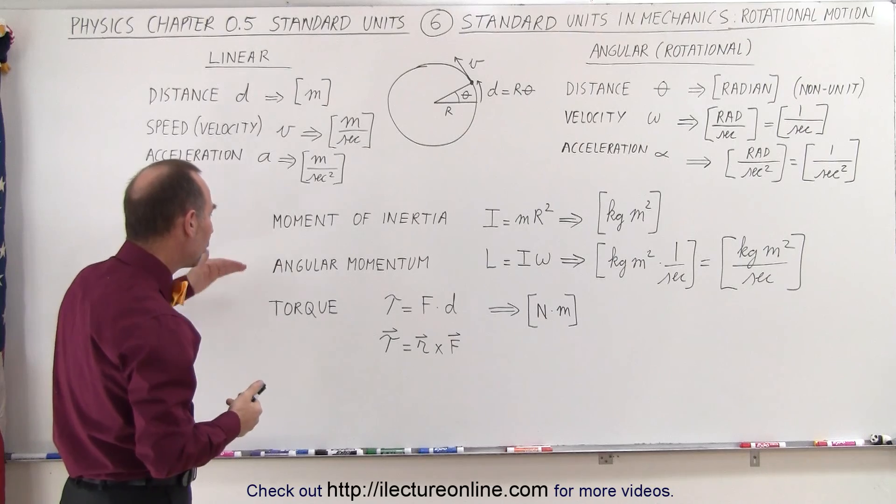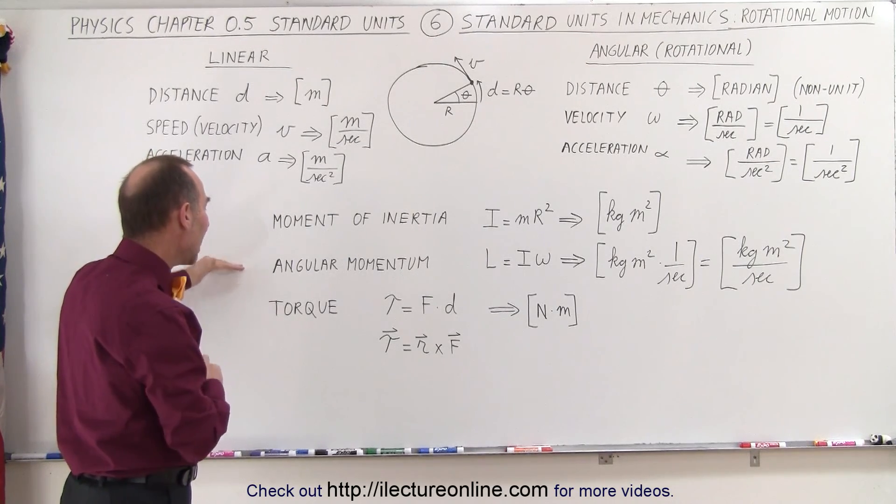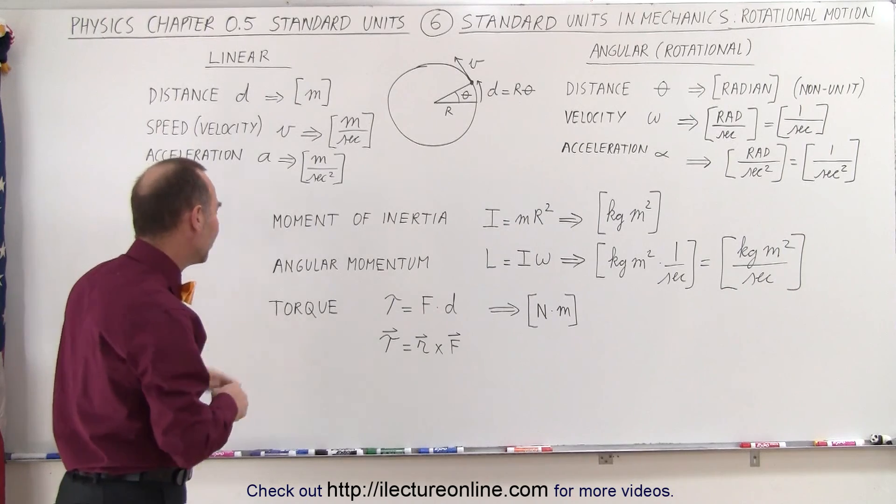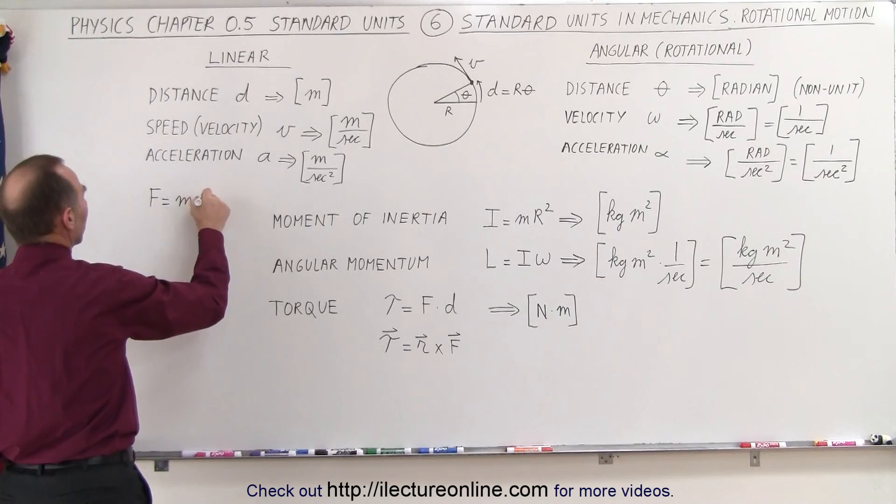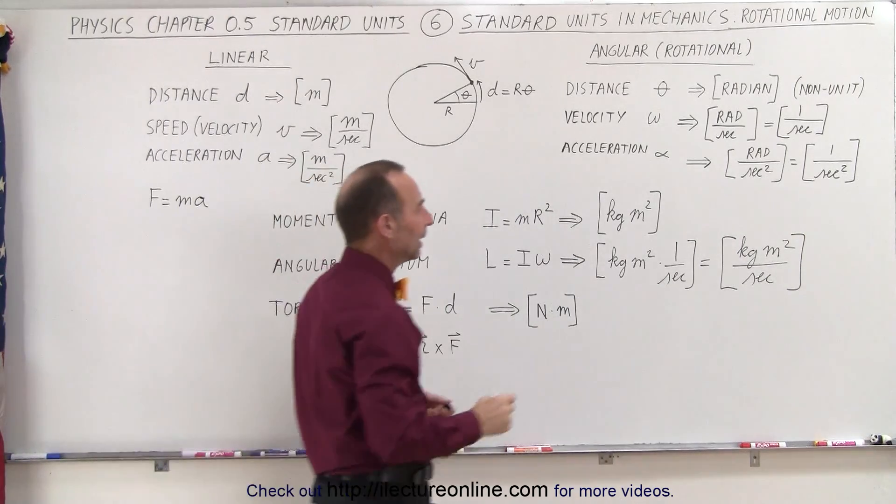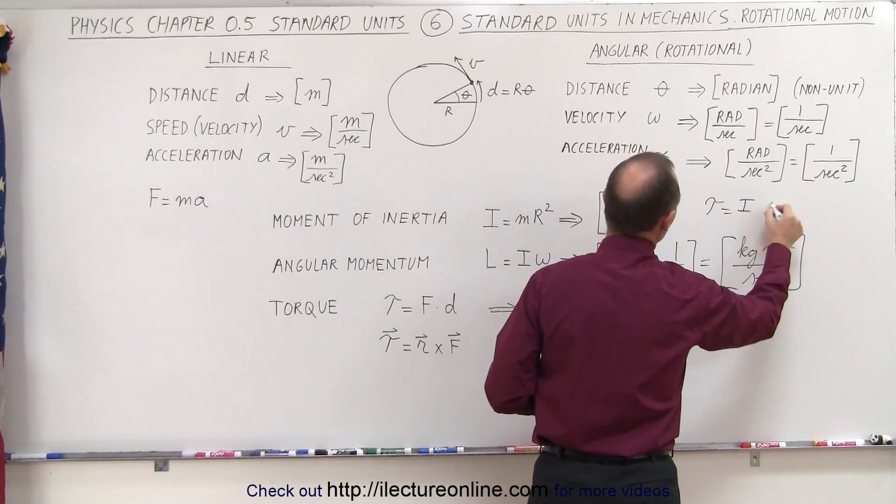And also, the equivalent to F equals MA in linear motion, we have torque equals I alpha. Let me write that down. So for linear motion, we use F equals MA to work out a lot of problems. And in rotational motion, we use torque is equal to I times alpha.